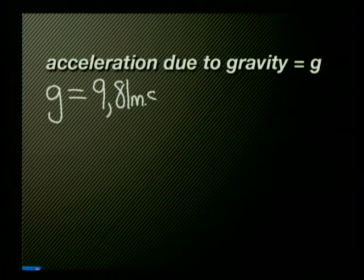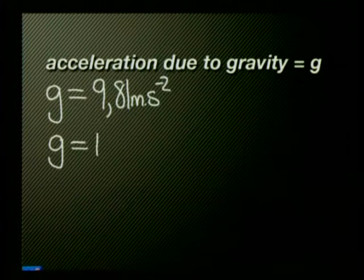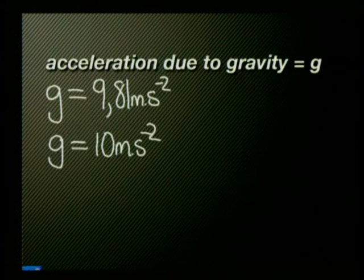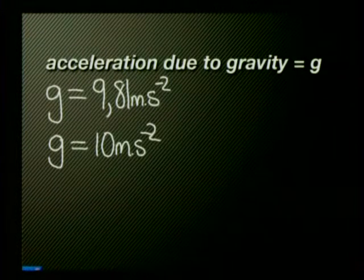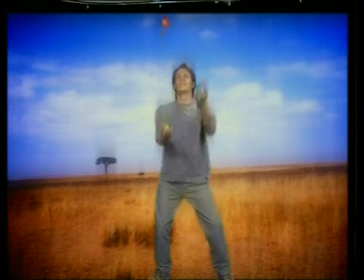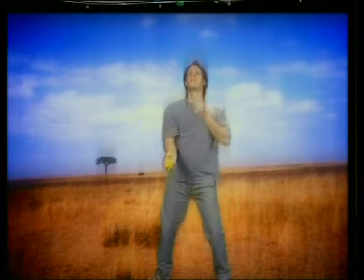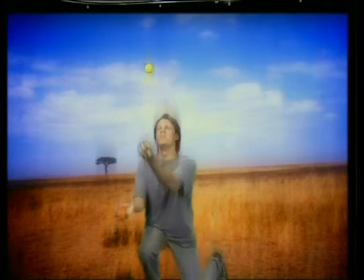Let's start by looking at the relationship between gravitational acceleration and weight. Remember, objects accelerate uniformly towards the earth with an acceleration of 9.81 meters per second squared downwards. We represent this with the symbol g and we will approximate this value as 10 meters per second squared downwards. A juggler knows that he can catch the balls at specified times because they accelerate downwards at this fixed rate of 10 meters per second squared on earth. Will the balls return at the same rate if he juggles on the moon?